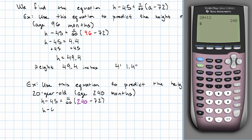H minus 45 is 11 sixtieths times 240 minus 72, 30.8.